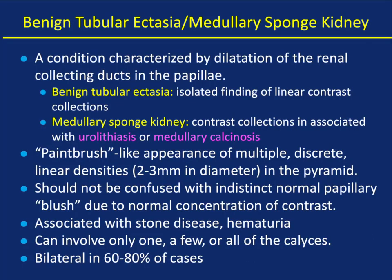Benign tubular ectasia and medullary sponge kidney is a condition characterized by dilatation of the renal collecting ducts in the papilla. With benign tubular ectasia, it's an isolated finding of linear contrast collections. With medullary sponge kidney, it's contrast collections in association with urolithiasis or medullary calcinosis — so for medullary sponge kidney, think stone disease. The paintbrush-like appearance of multiple discrete linear densities in the pyramid is classic. It should not be confused with the indistinct normal papillary blush due to normal concentration of contrast. It's associated with stone disease and hematuria, and can involve one or all calyces and one or both kidneys — it's bilateral in 60 to 80 percent of cases.